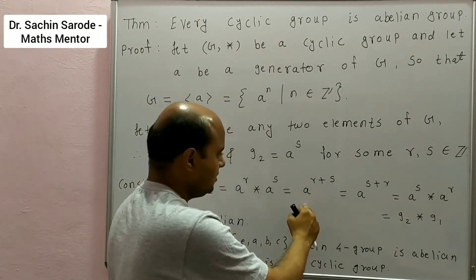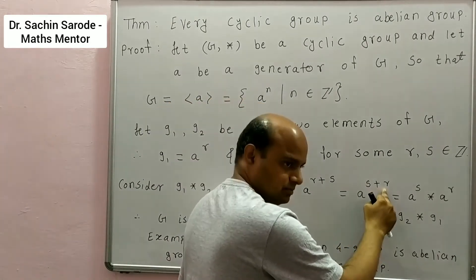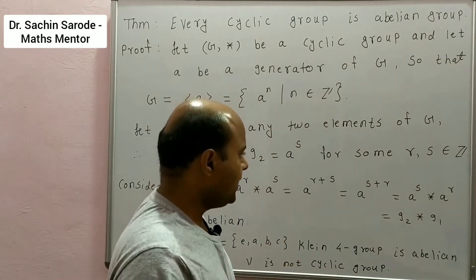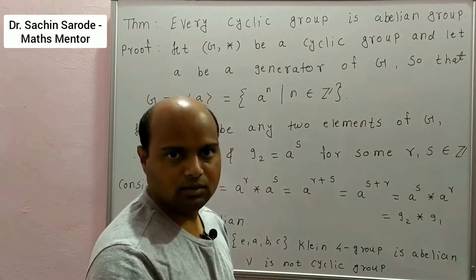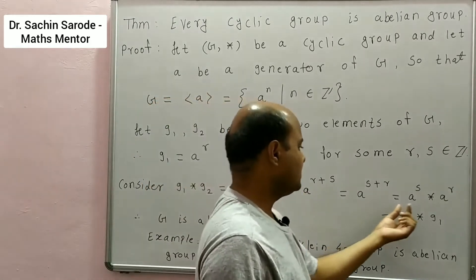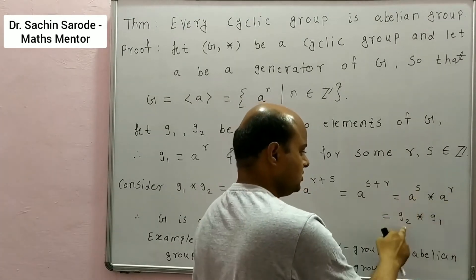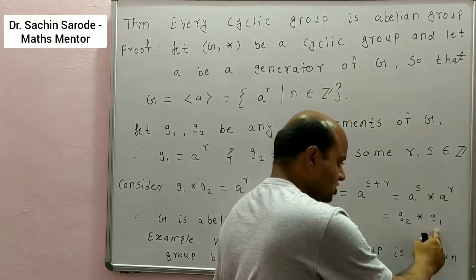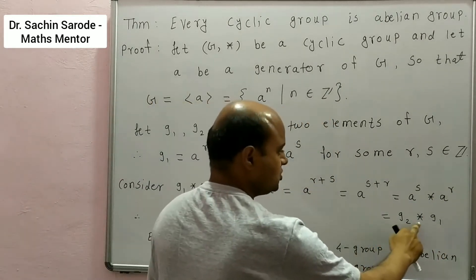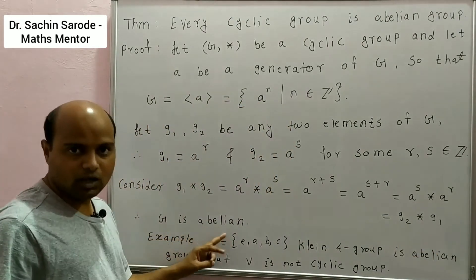We can write A^(R+S) as A^(S+R). Now A^(S+R) means A * A, S+R times. So we can write it as A^S * A^R. And A^S is G2 and A^R is G1. Therefore G1 * G2 = G2 * G1. And so by definition of abelian group, G is abelian.